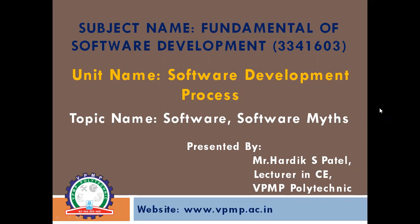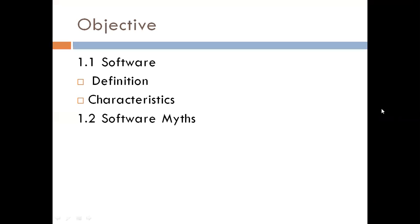Good morning friends and dear colleagues. Today we learn a subject fundamental to software development. The subject code is 3341603 and the unit name is Software Development Process. I am Hardik Patel, lecturer in computer engineering at VPMP Polytechnic. The first objective covers topic 1.1 software — definition, characteristics — and topic 1.2 software myths.